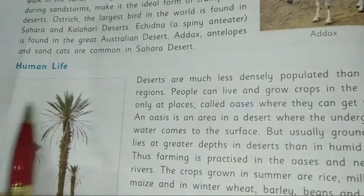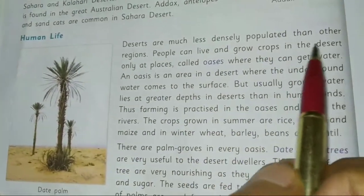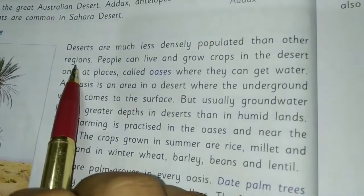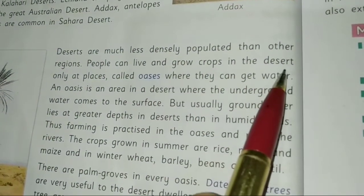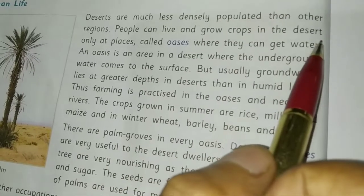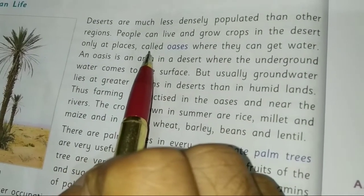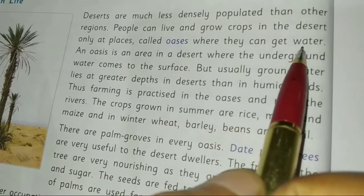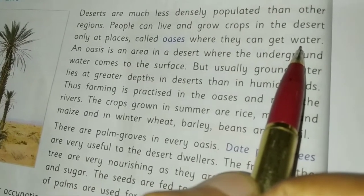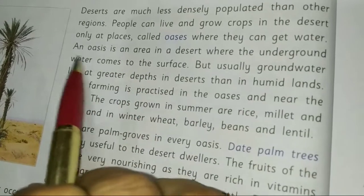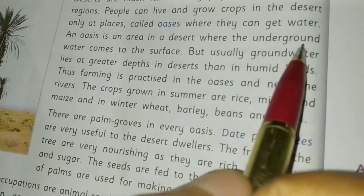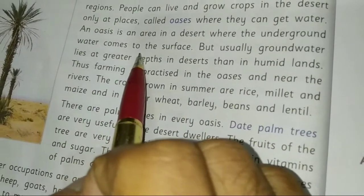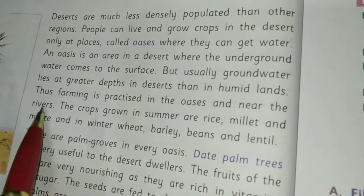Deserts are much less densely populated than other regions. People can live and grow crops only at places called oases. An oasis is an area in the desert where underground water comes to the surface. It is a place in the desert where groundwater can be accessed, though it usually lies at a greater depth than in humid lands.